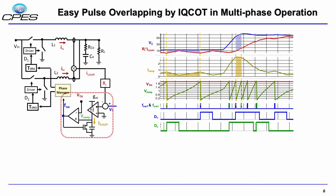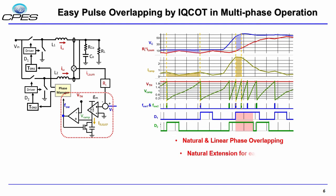In multiphase operation, looking at the right-side picture, we can see that in two-phase operation the duty cycles can overlap with each other very smoothly. We don't need a nonlinear control to overlap them. Also, in each phase the pulses can merge together to produce an extended T-on, so we can have natural and linear phase overlapping while also extending T-on naturally in each phase.